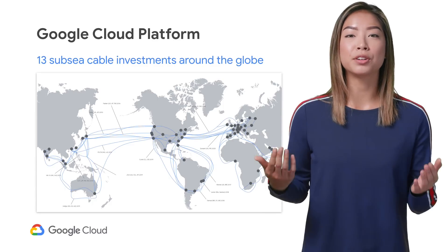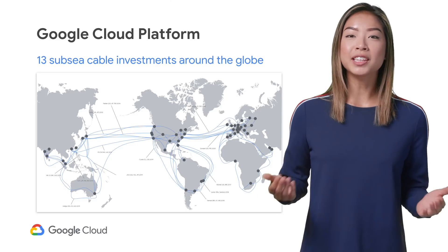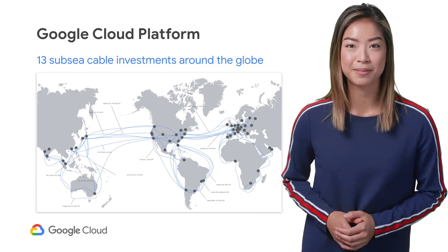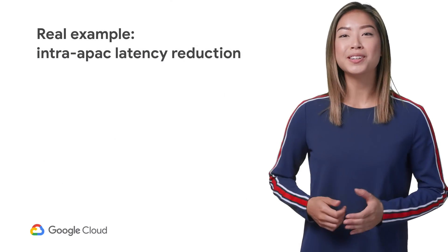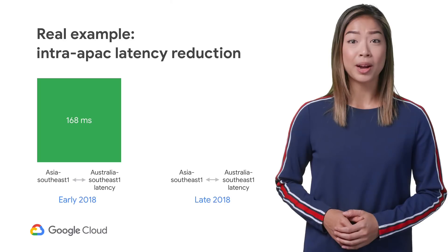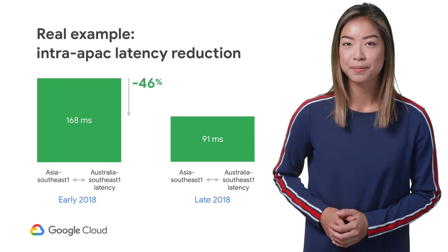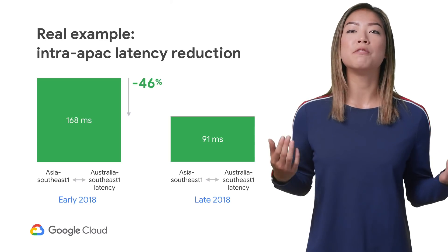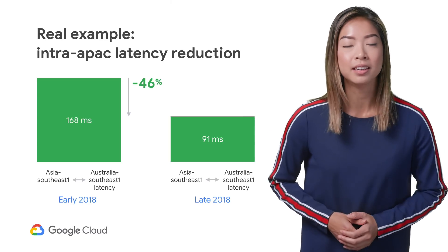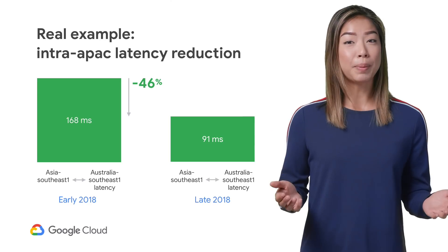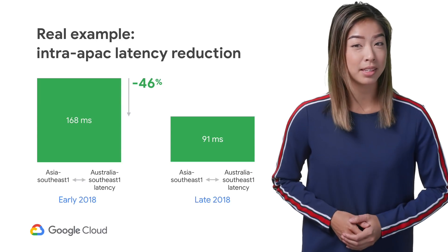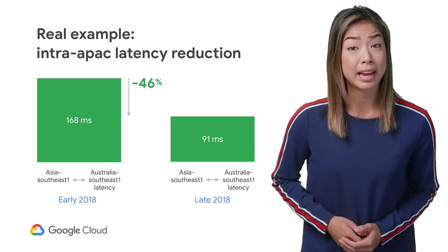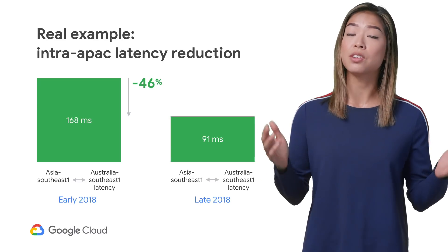Let's first talk about our global physical network. Over the last 20 years, Google has built an extensive network connecting continents using submarine cables. One of our new undersea cables between Sydney and Singapore has cut network latency in half. Planning and building our own submarine cables means we can build a level of path certainty and predictability of network traffic performance. These paths are private, and Google implements this through our consortium of partners, meaning Google Cloud customers are able to connect to this network at locations all over the world.